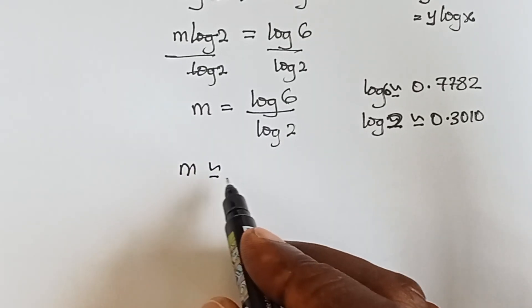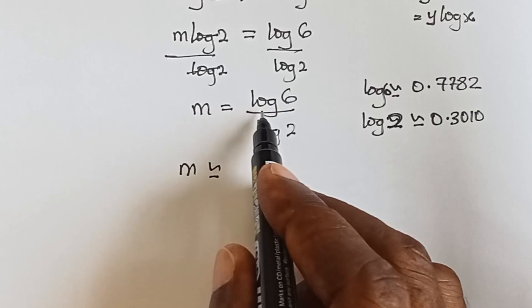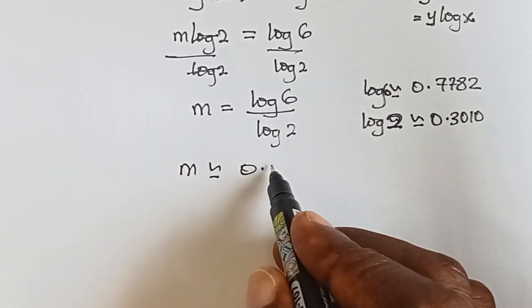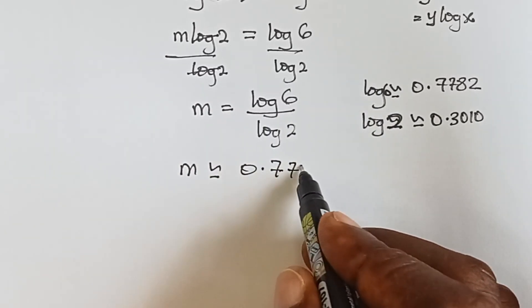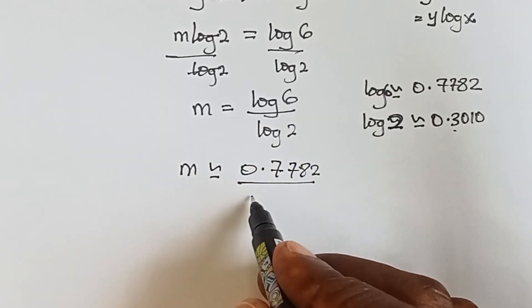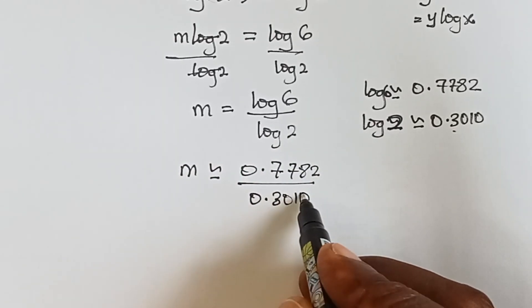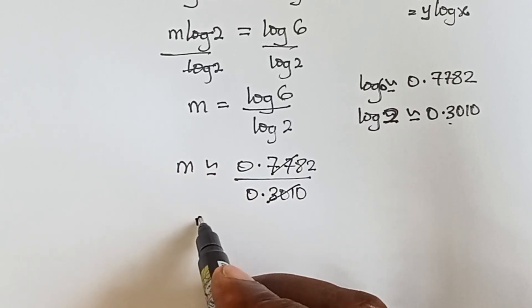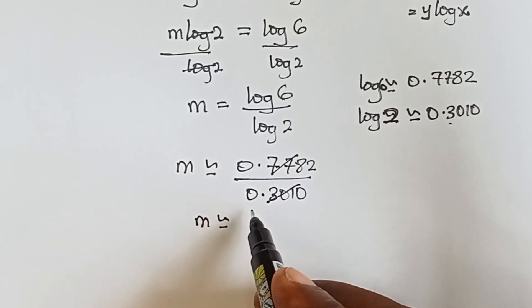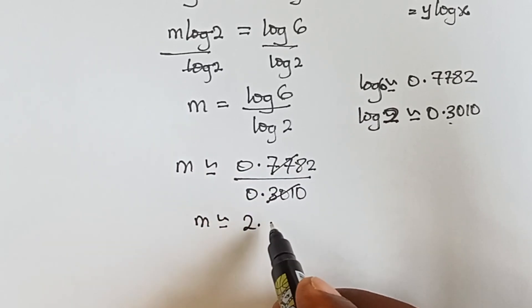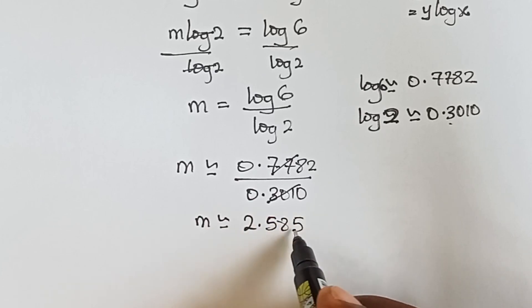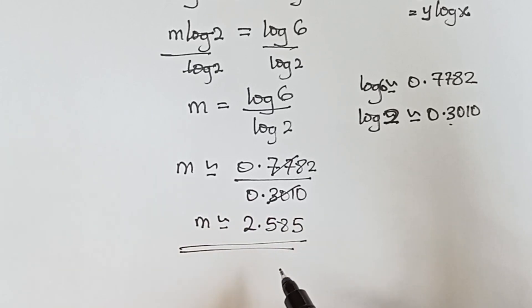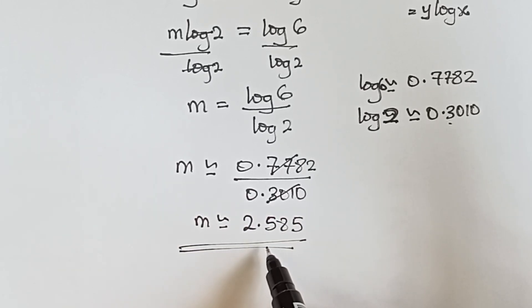It means m is equals to log 6, which is 0.7782, over log 2, which is 0.3010. This gives us 2.585. So m is approximately 2.585.